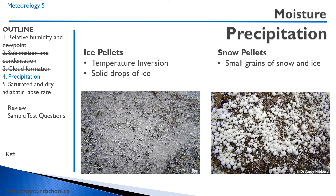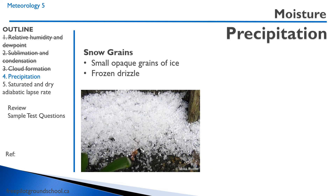Next, we have ice pellets, which are distinct from hail. Hail is from unstable air, cumulonimbus clouds, and thunderstorms, whereas ice pellets are caused by a temperature inversion. We have rain at altitude, and at lower altitudes we have colder air. That rain falls into the colder air and freezes on its way down — they're just frozen solid drops of ice. We also have snow pellets, which are a hybrid — small grains of snow and ice. Lastly, snow grains are small, opaque grains of ice and are essentially frozen drizzle.